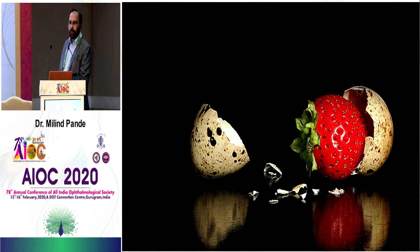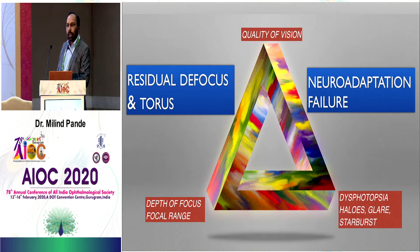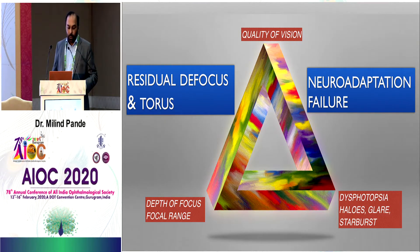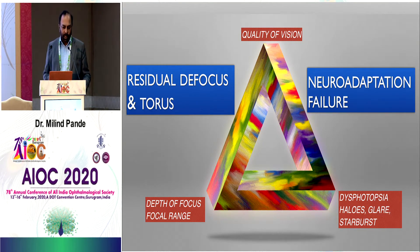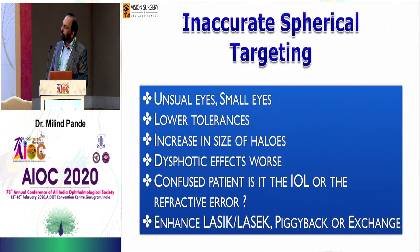We get unhappy patients when they're surprised, when they don't get what they're expecting. In presbyopia lens surgery, it's a matter of optimization — using lenses to get as wide a focal range as possible with the least quality-of-vision compromise. We tend to get two particular types of unhappy patients: those with residual defocus and toris or refractive surprises, and those who experience adaptation failures — they don't adapt well to the halos and glare.